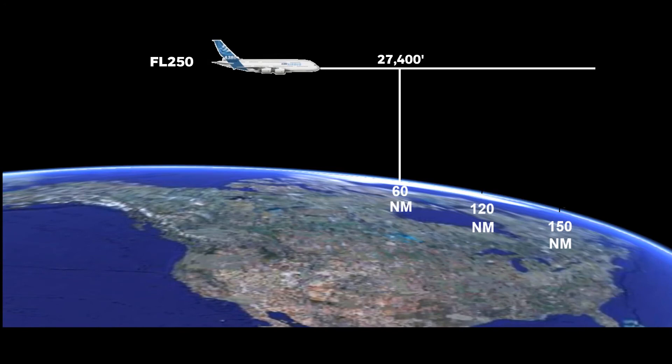If left uncorrected, the effect of the Earth's curvature can be quite significant. In the picture shown, the aircraft is at flight level 250. However, because of the Earth's curvature, the center of the beam is above 27,000 feet at 60 nautical miles, almost 37,000 feet at 120 nautical miles, and 44,000 feet at 150 nautical miles.